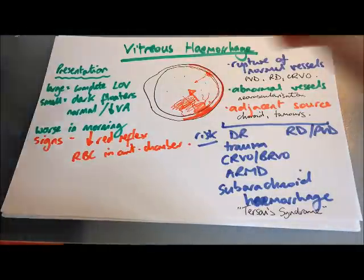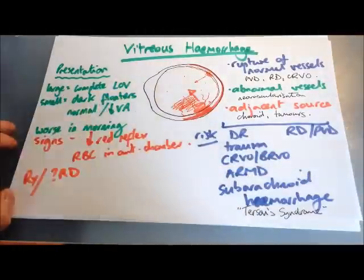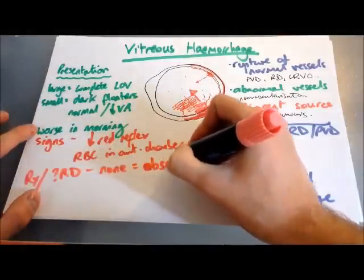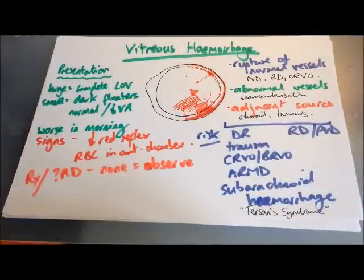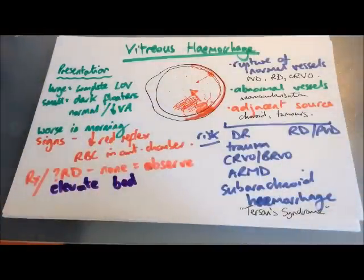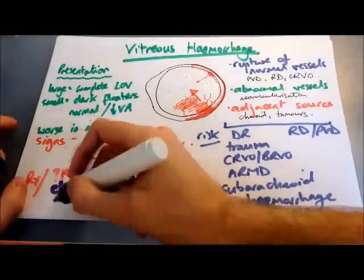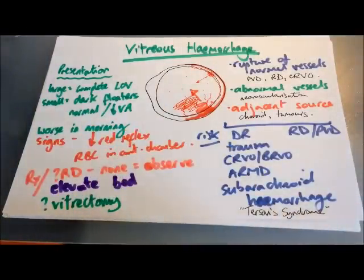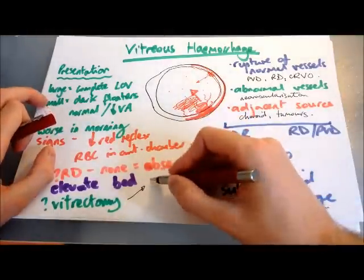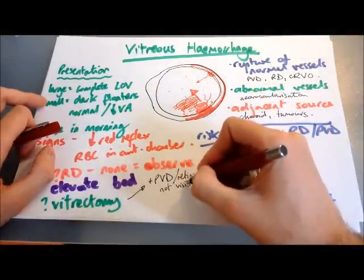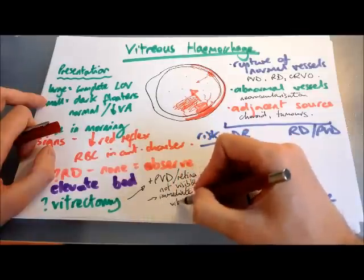What's the treatment for a vitreous haemorrhage? First, see whether there's an associated retinal detachment. If the retina is still attached, observe them on an outpatient basis — the bleed should be reabsorbed. Other measures such as elevating the head of the bed at night allows the blood to settle, which can help you view the retina if you're not sure about detachment or a break. Treat any underlying causes. If the haemorrhage doesn't clear, you can do a vitrectomy. And if you've got associated posterior vitreous detachment and can't see the retina because of the blood, treat this as a macula-on detachment — an urgent retinal detachment — with an urgent vitrectomy.